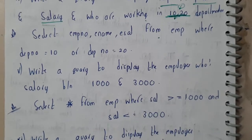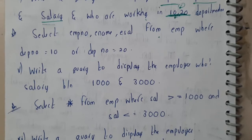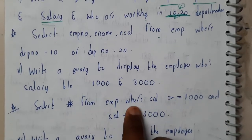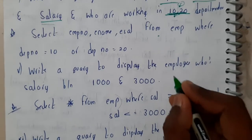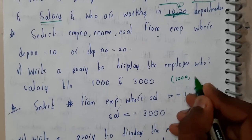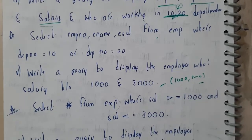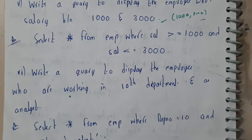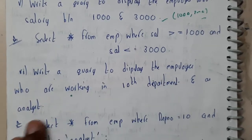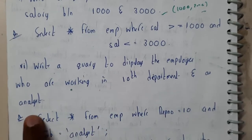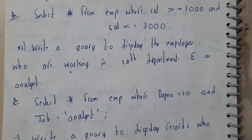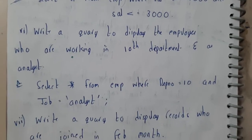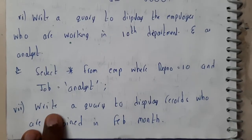Fifth: write a query to display employees whose salary is between 1000 and 3000 — we can use BETWEEN: SELECT * FROM emp WHERE sal BETWEEN 1000 AND 3000. We can also use less-than and greater-than symbols. Sixth: write a query to display employees working in department 10 and as an analyst — SELECT * WHERE department_number = 10 AND job = 'ANALYST'.